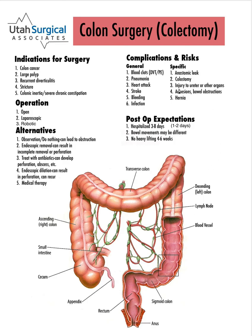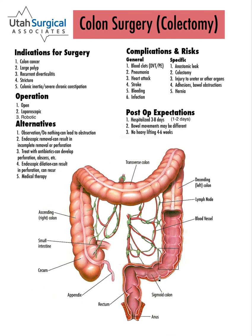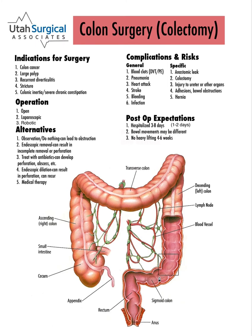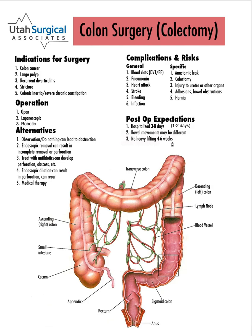Another risk is injury to the ureter, which is the tube that goes from the kidney down to the bladder on either side. Particularly with severe diverticulitis in this area, it can be hard to find the ureter, so there's a risk of it being injured. There's also a risk of injury to other organs in the area.